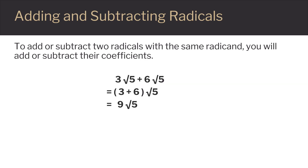Let's take a look at an example. We have 3 square root of 5 plus 6 square root of 5. We have the same radicand, the square root of 5. Take the coefficients 3 and 6, add them to get 9. Your answer is 9 square root of 5.